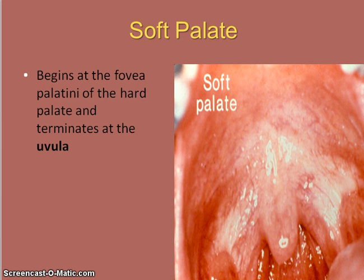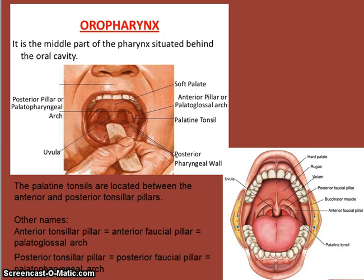The soft palate begins at the fovea palatine and terminates at the uvula. The oropharynx is the middle part of the pharynx situated behind the oral cavity. The palatine tonsils are located between the anterior and posterior tonsillar pillars. Other names for the anterior pillar are the anterior fascial pillar or the palatoglossal arch. Other names for the posterior tonsillar pillars are the posterior fascial pillars or the palatopharyngeal arch.